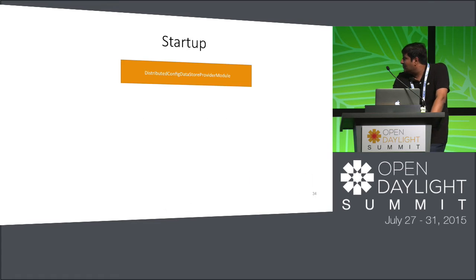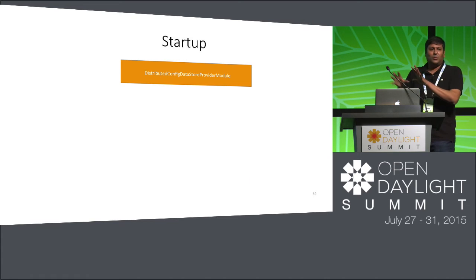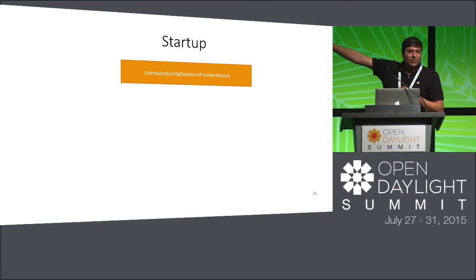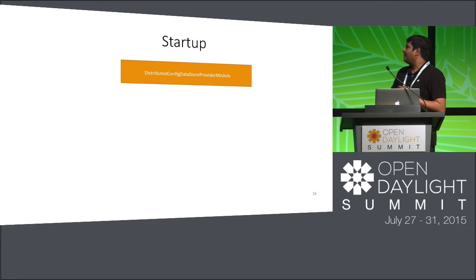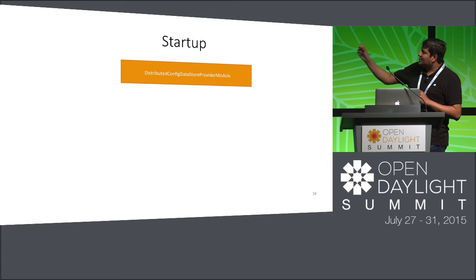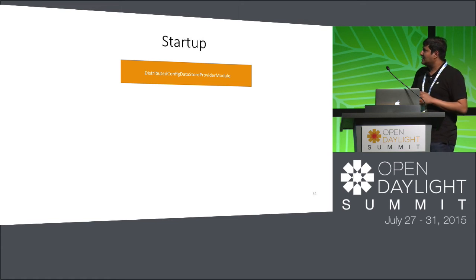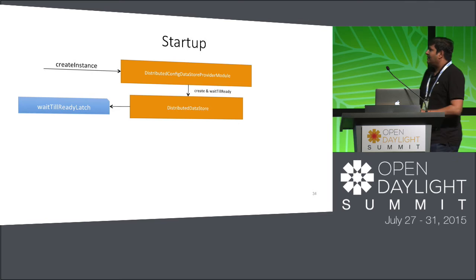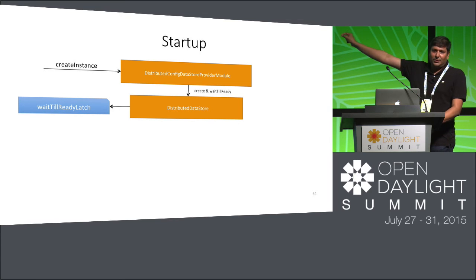For the data store, there are two data stores: config and operational. The starting points are the module classes — distributed config data store provider module and distributed operational data store provider module. When they start up, a create instance method is called, which creates an instance of the distributed data store. With in-memory data store it's immediately available, but with distributed data store you cannot tell because if you start only one controller instance and others aren't started, there's no consensus on who is the leader.